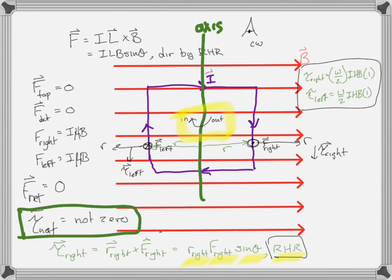Think about what the motion is going to be. Let's say it's unhindered — frictionless — and the only force on it is the magnetic force, and this current loop is in a constant magnetic field. What's going to happen is the loop is going to rotate, but when it rotates things change. Once it rotates 90 degrees, think about it.